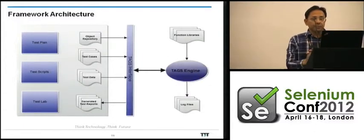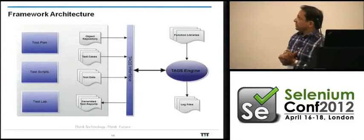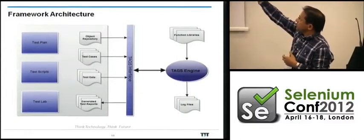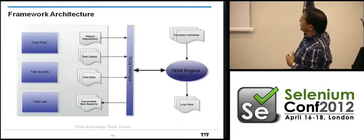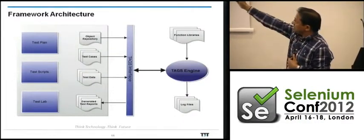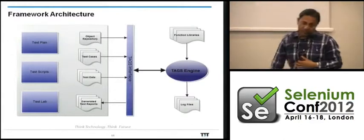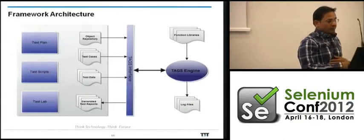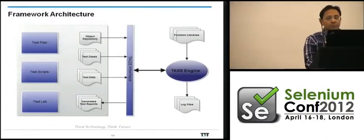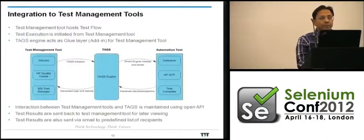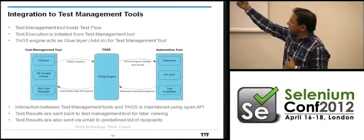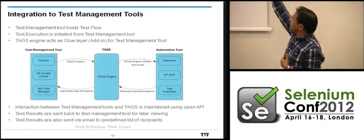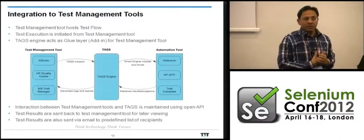This is the interface architecture: the TAGS interface layer pulls in the object repository, test cases, and test data, fires them to the engine, which in turn fires to the automation tool, and the results come back and go to the appropriate test case management tool. Currently we have implementations for XStudio, Quality Center, and Microsoft Test Manager, and on the automation side, Selenium and QTP. Test Complete is partially there but not complete yet.